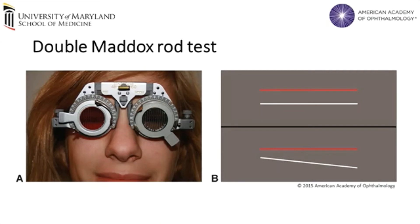The double Maddox rod test measures cyclotropia or torsional deviations of the eye. A Maddox rod is placed in a trial frame or phoropter and positioned in front of each eye, with the rods aligned vertically so that the patient sees horizontal lines. The rods are rotated until the lines are perceived to be parallel. If the rod has to be rotated inward, the patient has incyclotorsion. If the rod has to be rotated outward, the patient has excyclotorsion. The degree of rotation required for the lines to be parallel determines the torsional deviation.